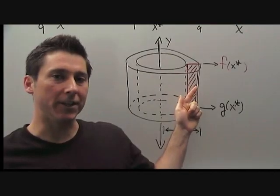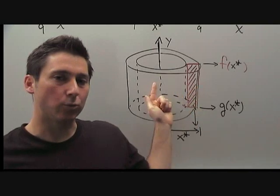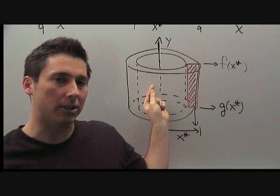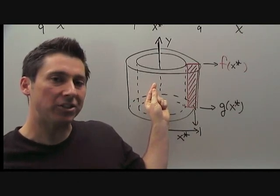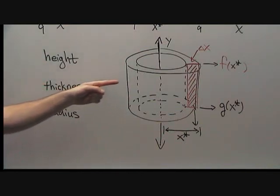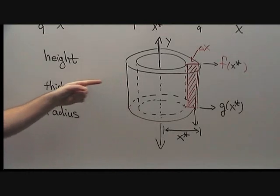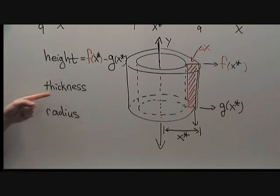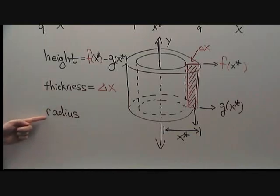When we revolve this small rectangle about the y-axis, it's relatively easy to see that it should sweep out a narrow cylinder. And let's look at the dimensions of that cylinder. We need to determine the height, the thickness, and the radius of this cylindrical shell. The height is given by f(x*) - g(x*). The thickness is given by Δx. The radius of the shell is given by...